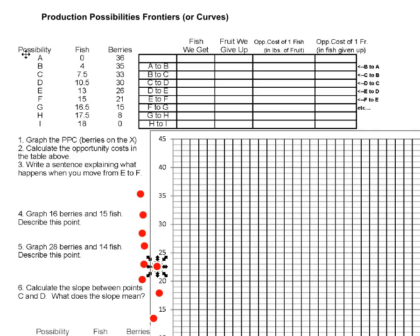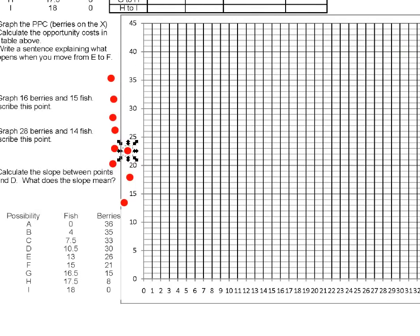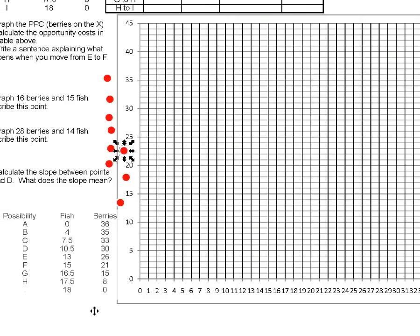We have different combinations of what is possible, and everything in between these possibilities will also be possible. Let's graph these points. I'm going to put fish on the x-axis and the fruit or berries on the y-axis, so let me label that — I'll label it 'fruit' instead of berries.